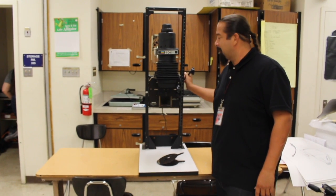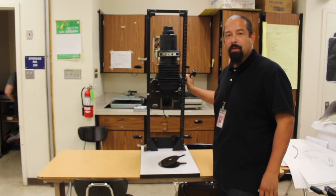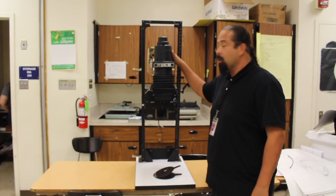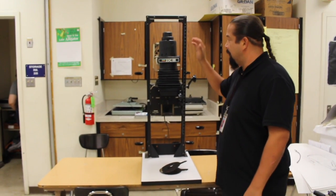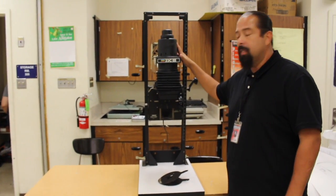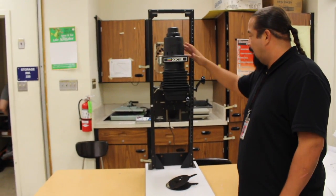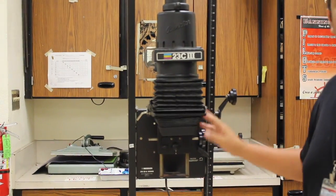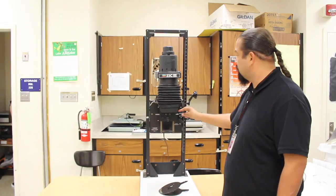Hello class, this is Mr. Vargas again coming to you from room 325. Today we're going to do a quick introduction on the Bessler 23C enlarger, which we'll be using to make prints. I'm just going to introduce you to all the levers and all the parts so you have a better understanding of how to use it. So let's get started.